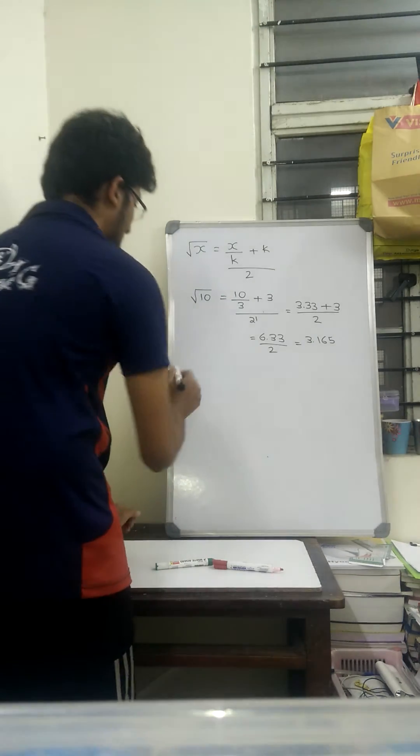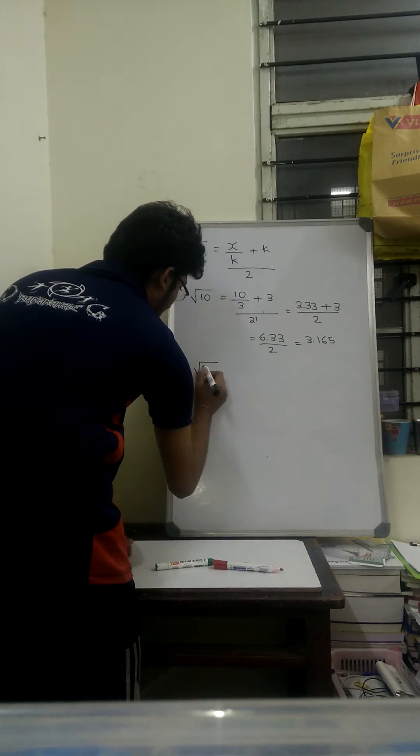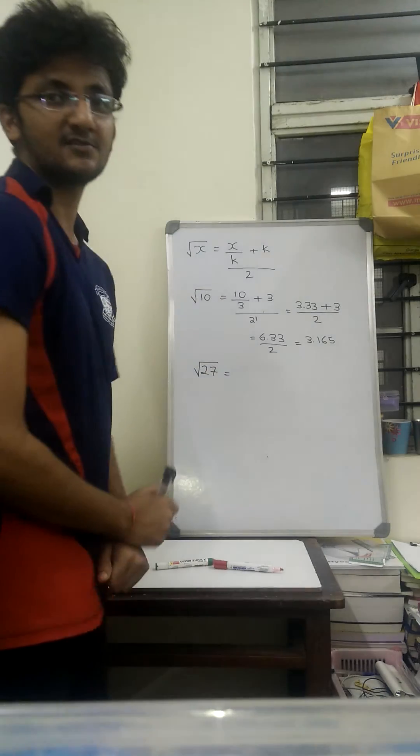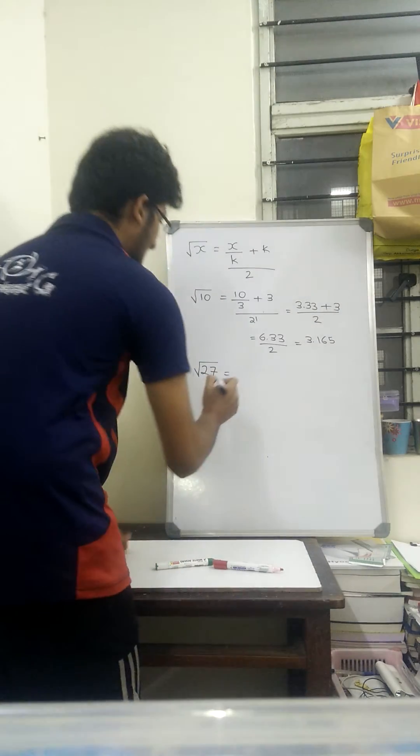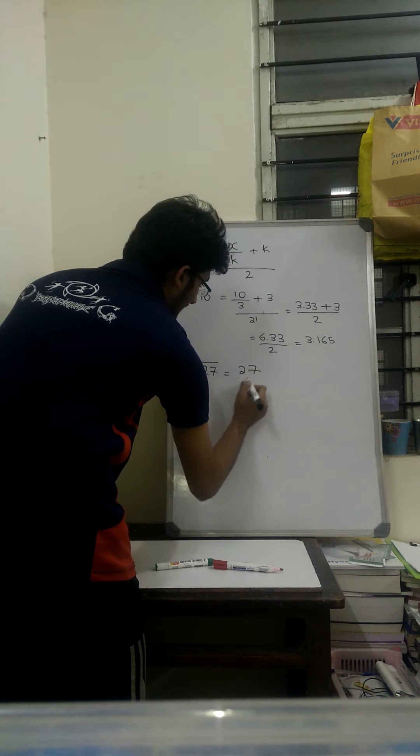Let's take another example. Let's say we have to find square root of 27. The nearest perfect square root of 27 is 25. Square root of 25 is 5.